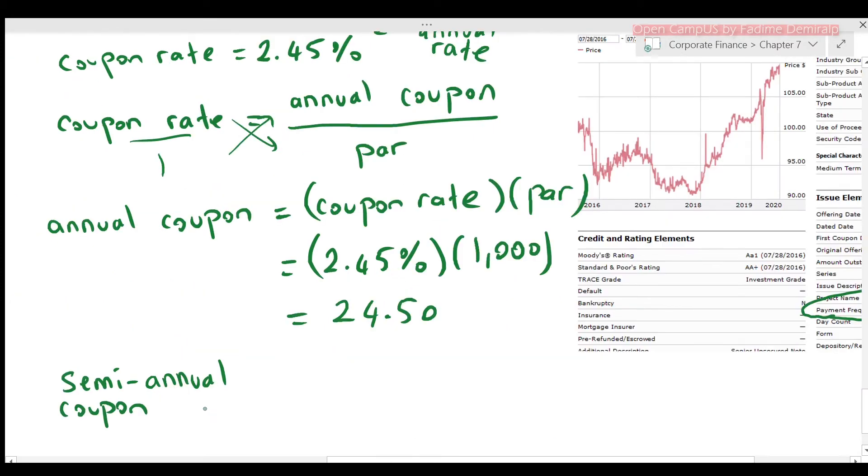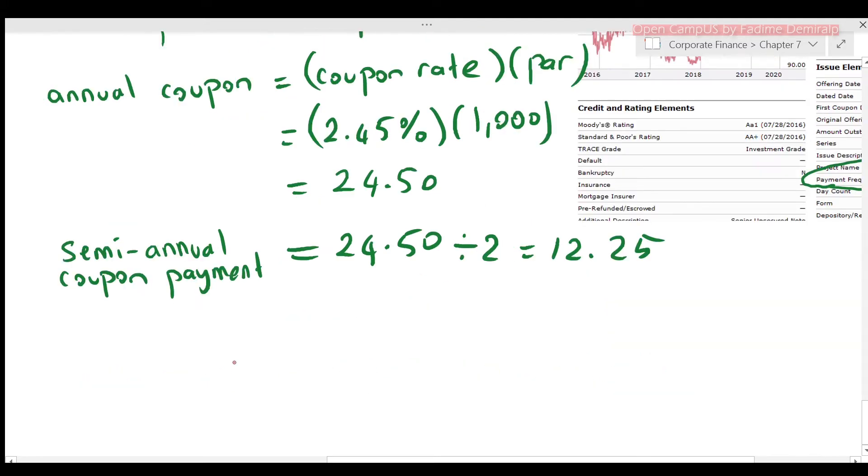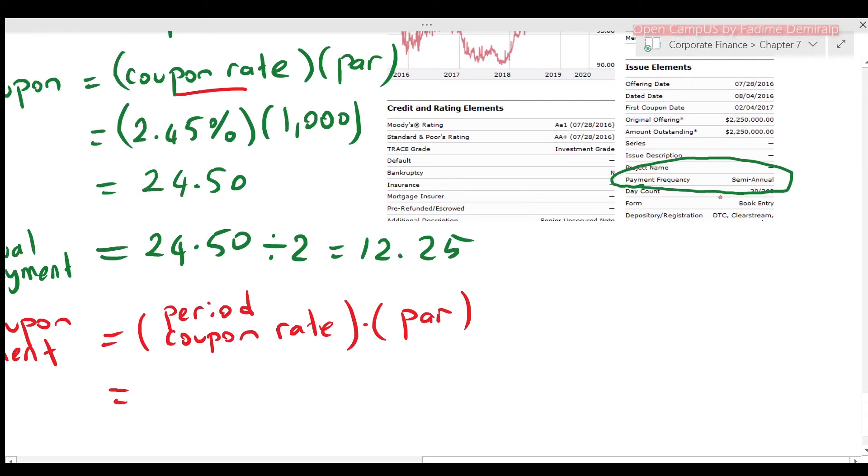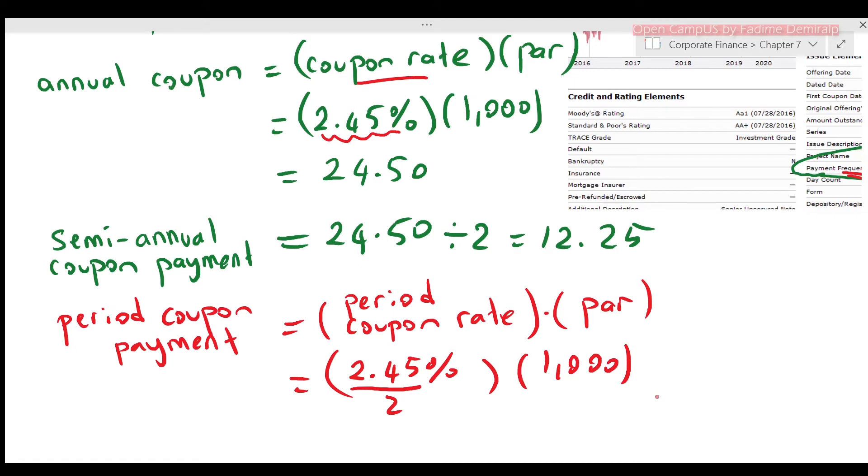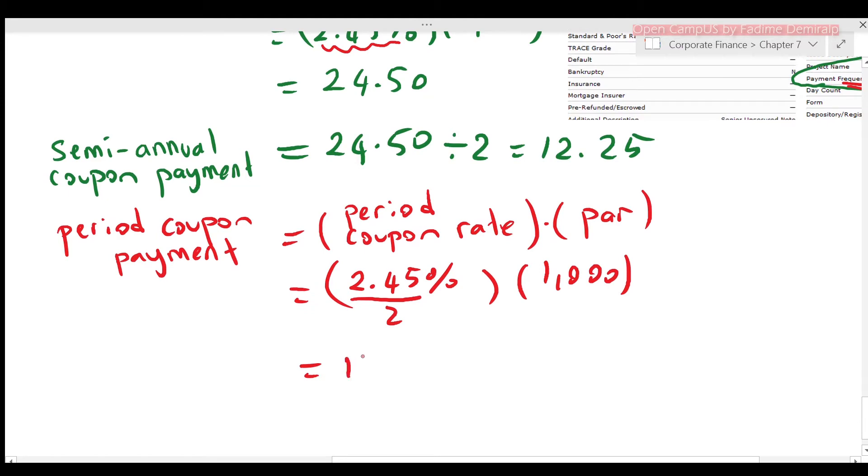Payment frequency is semi-annual. Then semi-annual coupon payment will be half of the annual coupon, $12.25. If you wish to find the period coupon payment, instead of having coupon rate, you can have period coupon rate. For this example, since payment frequency is semi-annual, we have semi-annual payment. In other words, coupon is paid twice a year. To find the period rate, we divide this annual rate by 2. 2.45% will be divided by 2, then multiply by the par. Remember chapter 6 video where I discussed APR and period rate. This is exactly what I'm doing here. If we complete the work, we'll get 12.25.